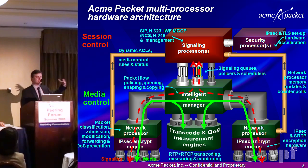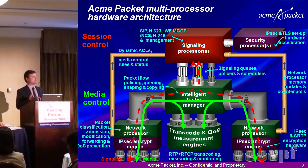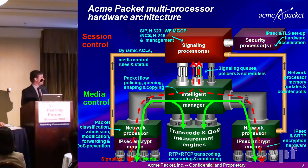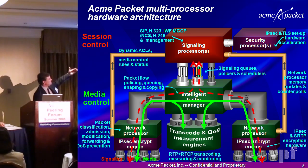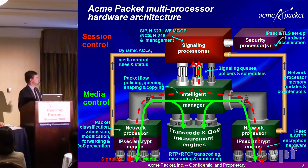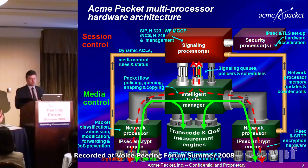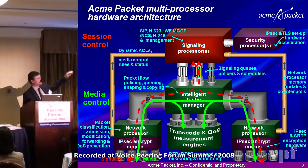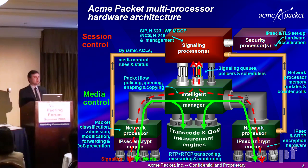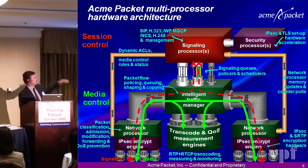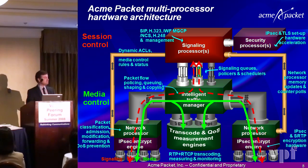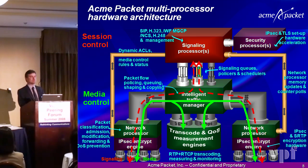At the front end you may have network processing that assists the software functionality in the session border controller with hardware. That hardware can do lookups and forwarding — simply to forward media to the control plane or onto the next user — but it may also protect the service itself. You need an interface between the signaling processor and the network processor so that you can dynamically protect the service. Encryption may sit at the front end or as a security coprocessor. As you can see, signaling would flow up to the signaling processor, while media would flow end to end at line rate through the network processing. That's a good look at the anatomy of a session border controller.